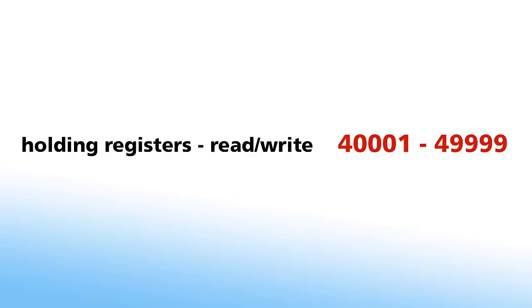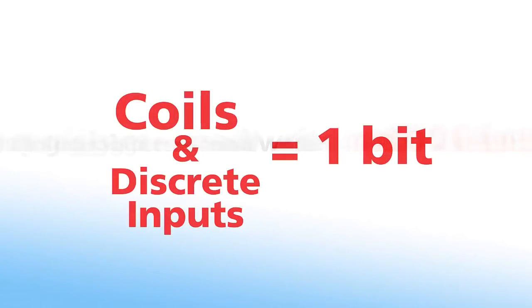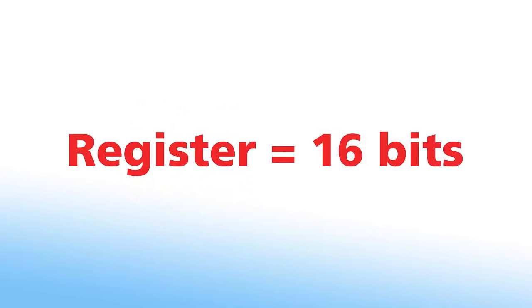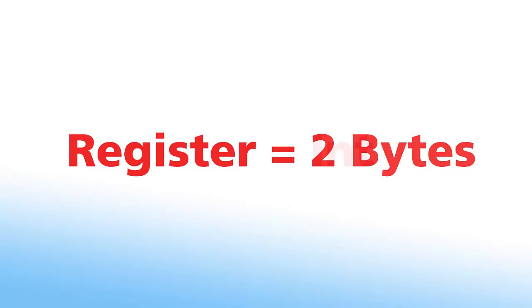At this point, it might be helpful to explain the terms used for data types in Modbus. Coils and discrete inputs are the Modbus vernacular for one bit of data or, in Rockwell terms, a bool. Basically, on or off.